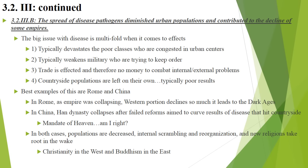Continuing on: beyond irrigation and the spread of goods, there is also the spread of disease. 3.2.3b: spread of disease pathogens diminishes urban populations and contributes to the decline of some empires. The issue of disease impacting empires is multi-faceted. Number one: disease typically devastates the poor classes who are congested in urban centers.